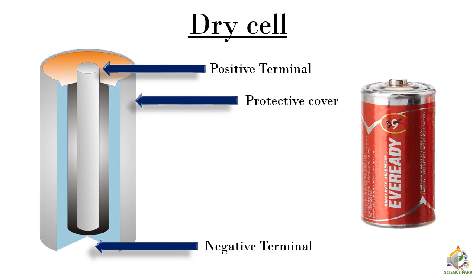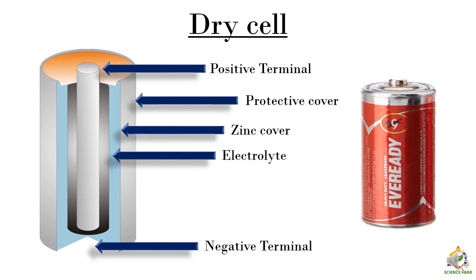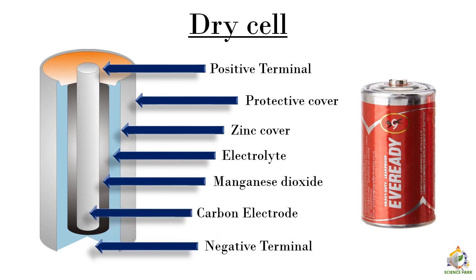There is a protective cover on the dry cell. Inside that you have another cover made up of zinc. When you open that zinc cover you will find a black color chemical which is also called as an electrolyte. Inside that layer of electrolyte we have another layer of manganese dioxide. And in the center we have carbon electrode which actually acts as a positive terminal.